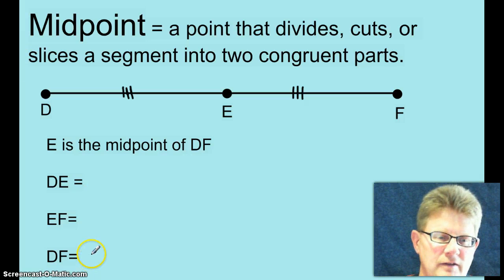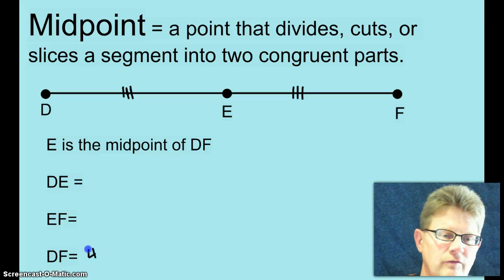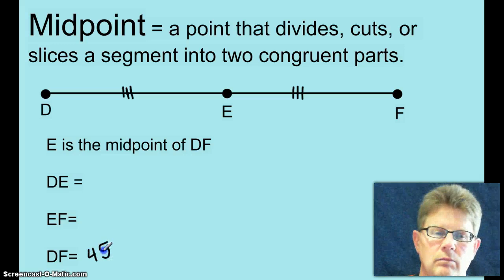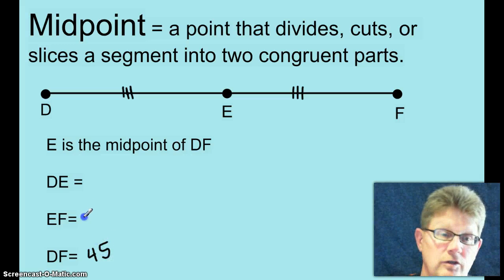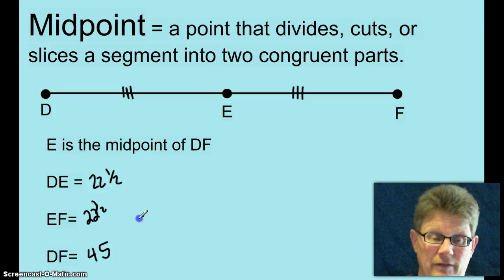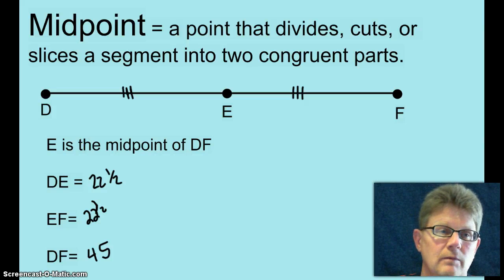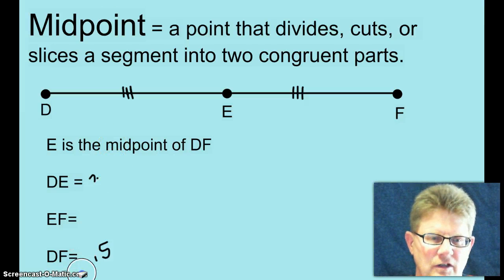How about instead I tell you that DF is 45. Does that mess you up? Hopefully not. You should be able to figure out that those are both 22 and a half, right? Yeah, I would think so. They're both 22 and a half, or 22.5 if you'd rather. Yeah, okay. They're both 22 and a half. So I still didn't stump you.